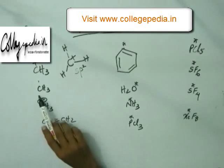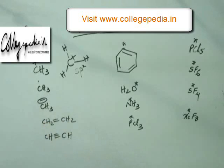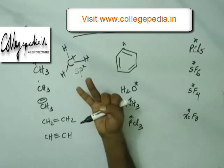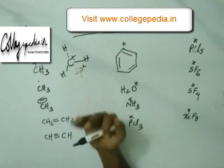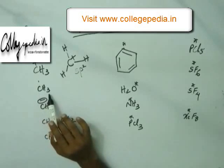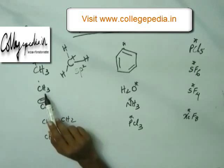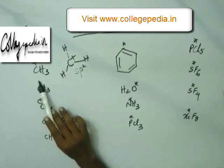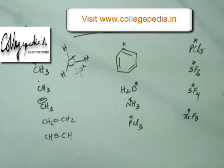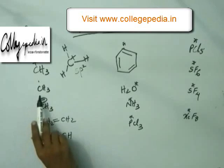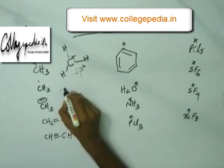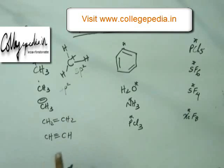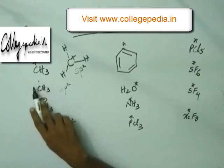For the methyl free radical, look for sigma bonds, negative charge, and lone pairs - those three require hybridization. There are 3 sigma bonds with hydrogen, no negative charge, no lone pair. The free radical electron resides in a pure p orbital. So only 3 hybridized orbitals are needed - from mixing one S and two P orbitals. The hybridization state of carbon in methyl free radical is sp2.